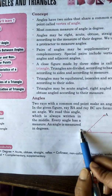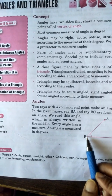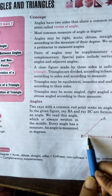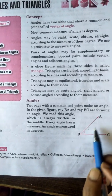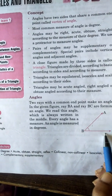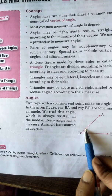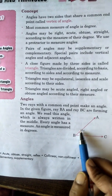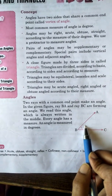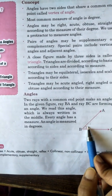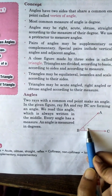Jo bhi do rays rehti hain, do rays ke beech mein ek common point rehta hai. Uss common point ke beech mein jo bhi difference rehta hai, wo hamara angle hota hai. Yahaan par dekhiye BA aur BC — in donon ke beech mein jo bhi figure ban raha hai, wo hamara angle hota hai. Angle ko hamesha hum beech mein hi likhte hain, aur angle ko degree mein measure karte hain.